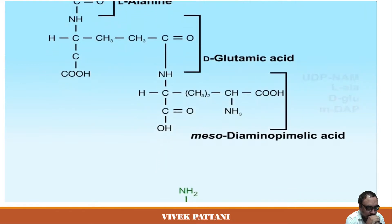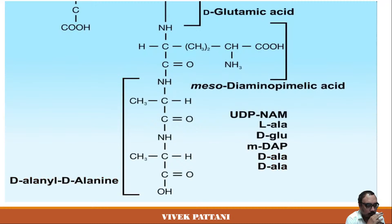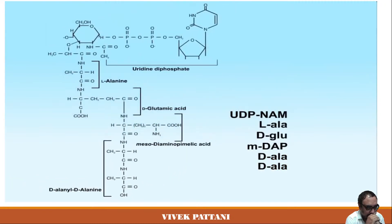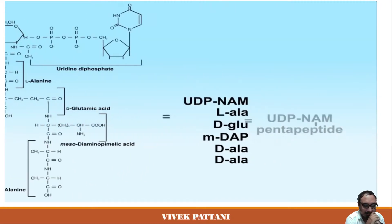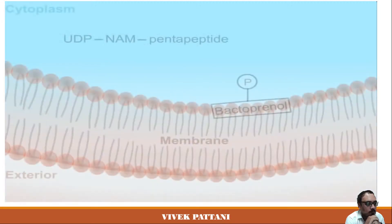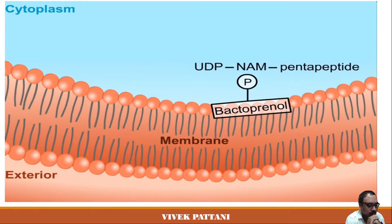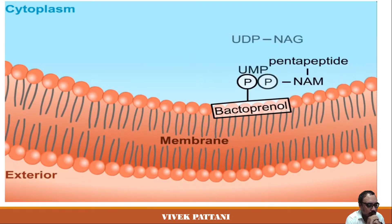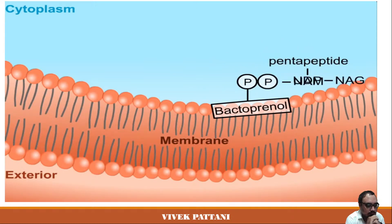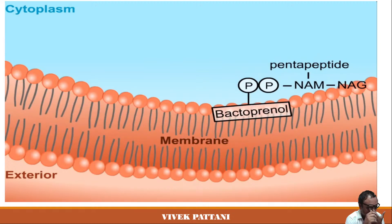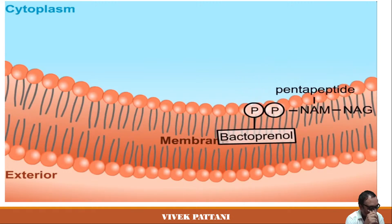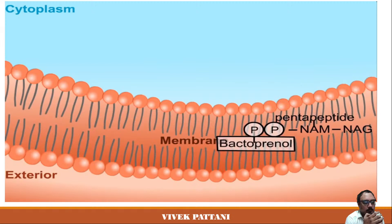In the case of Escherichia coli, L-alanine is added first, then D-glutamic acid, then meso-diaminopimelic acid, and finally the dipeptide D-alanyl-D-alanine is added to form the pentapeptide side chain. The NAM pentapeptide is then transferred from UDP to bactoprenol phosphate at the membrane surface, and then NAG is transferred from UDP-NAG to the bactoprenol-NAM pentapeptide to form the final disaccharide pentapeptide precursor.